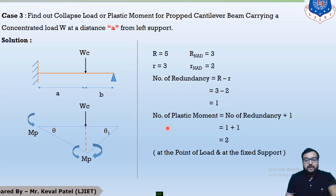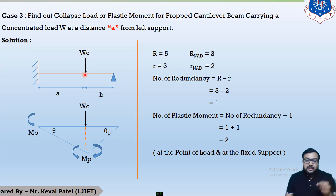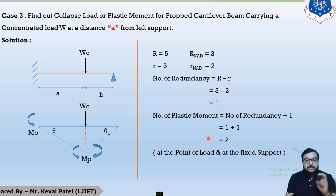Step 2: number of plastic hinges equals number of redundancy plus 1, which is 1 + 1 = 2. There are 2 points in the system that take moment. The fixed support always restrains moment, so a plastic hinge forms there. At the point of load application a plastic hinge also forms. The hinge support releases the moment, so the moment there is zero.